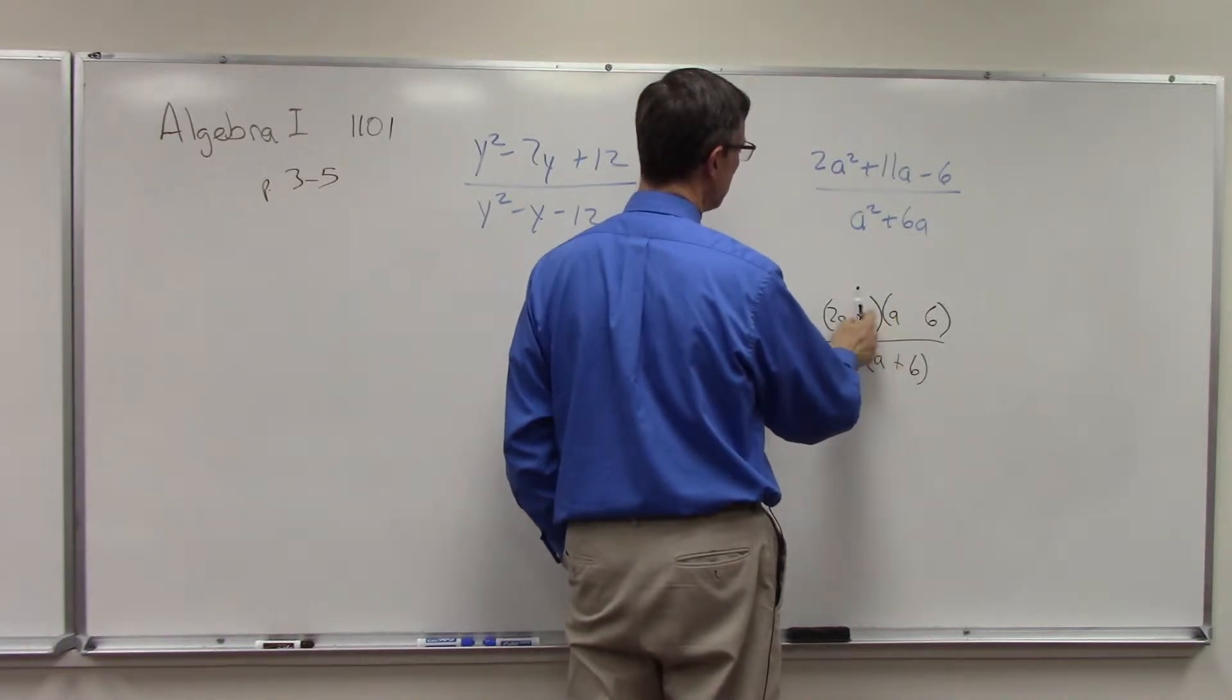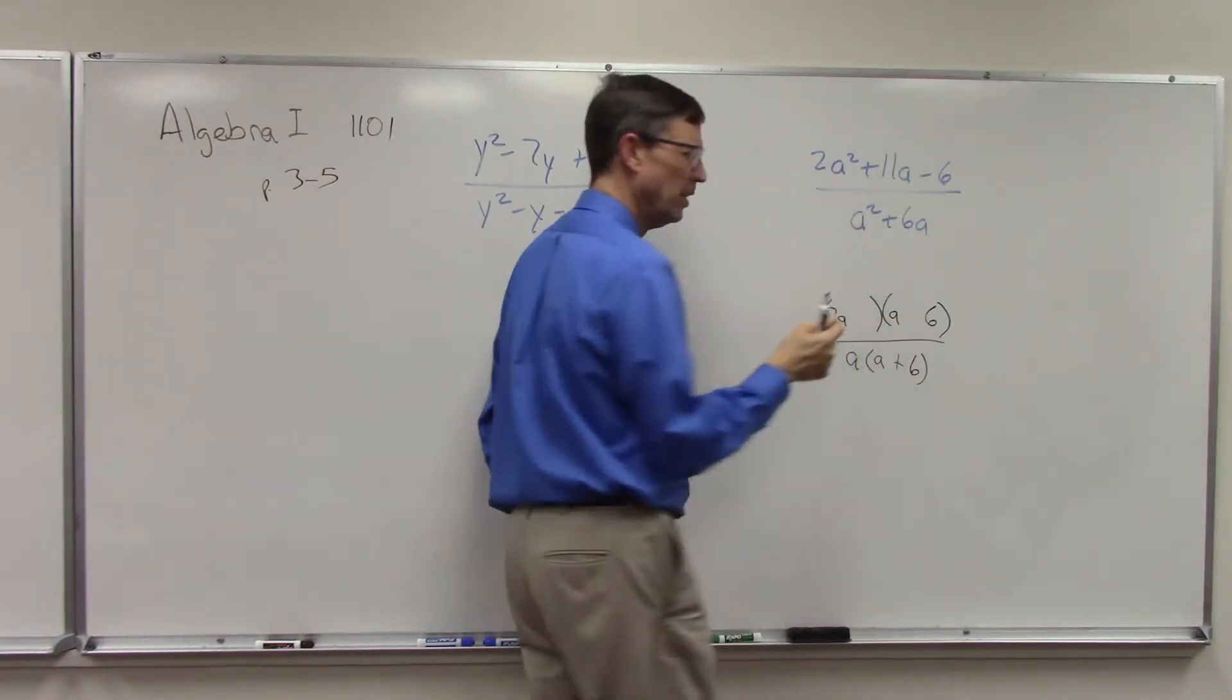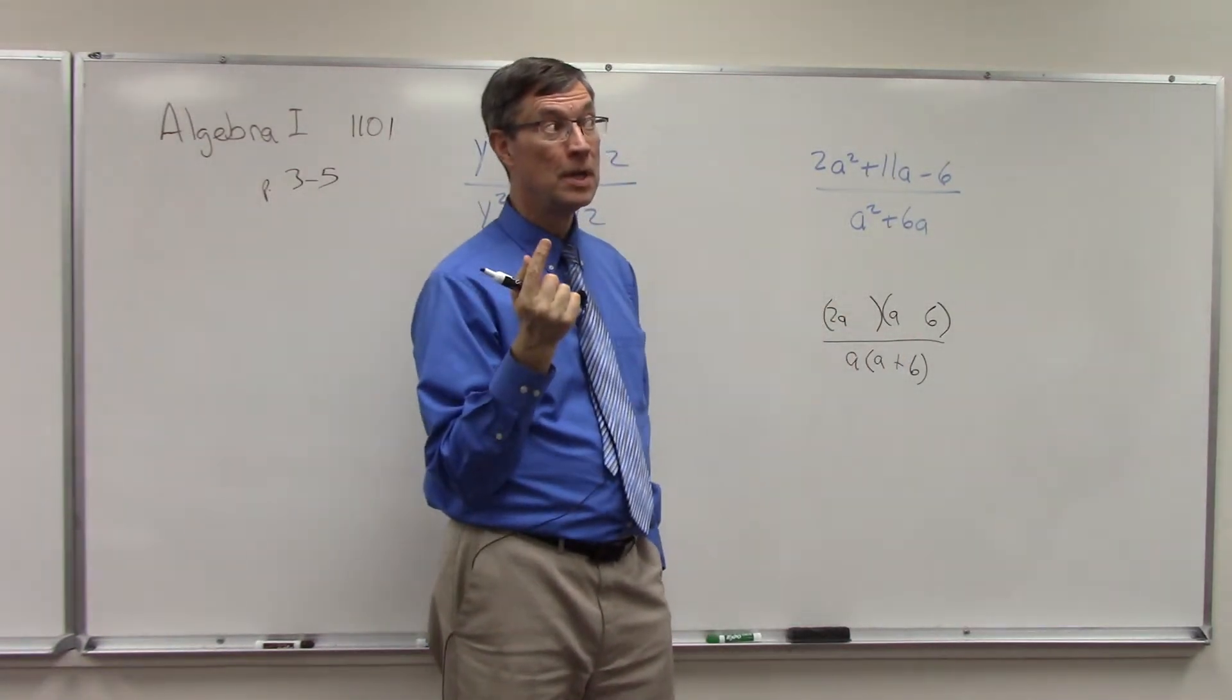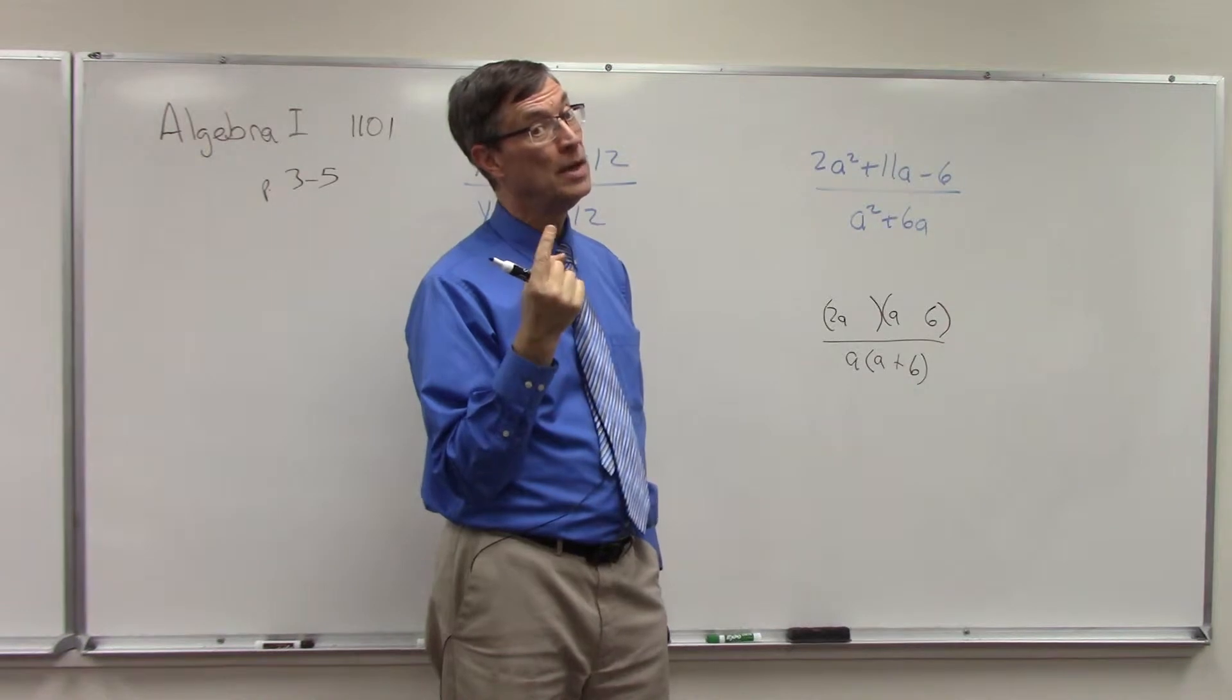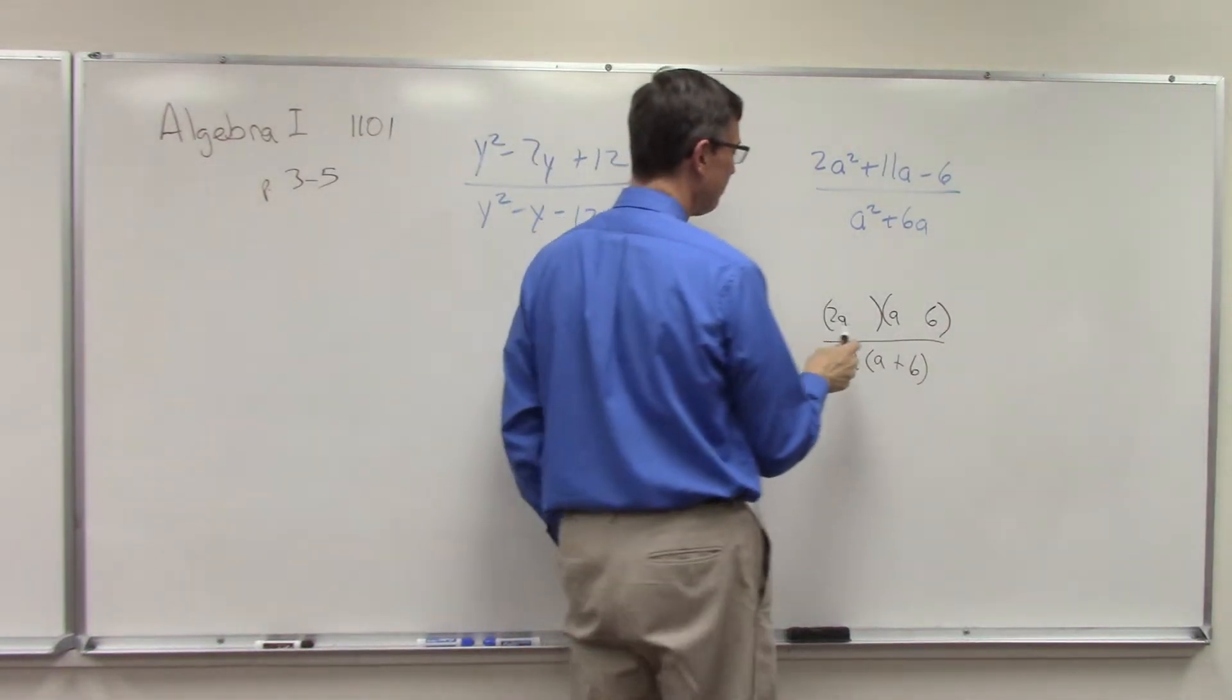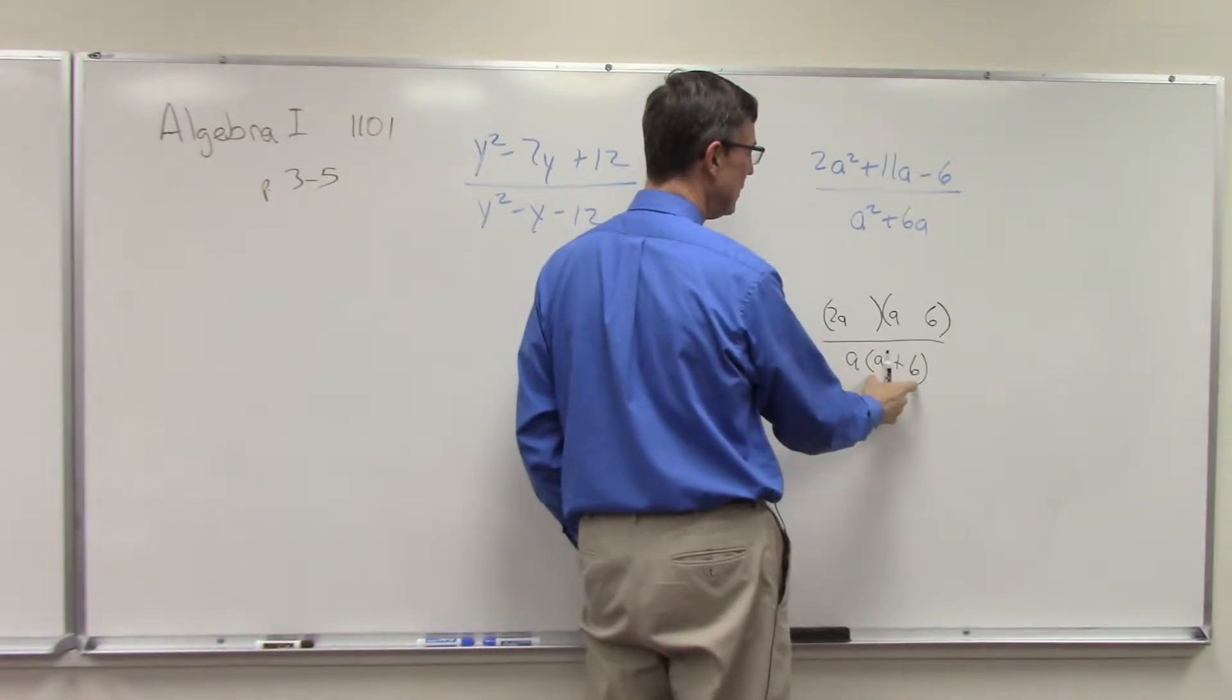And I'm trying to get 11 in the middle, so 2 times 6 is 12, 12 minus 1 is 11.